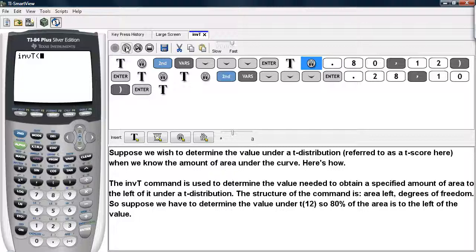So suppose you have to determine the value under a t-distribution with 12 degrees of freedom so that 80% of the area is to the left of that value. This is how you do it: you type in the area left, a comma, and then the degrees of freedom, in this case 12, and hit enter.